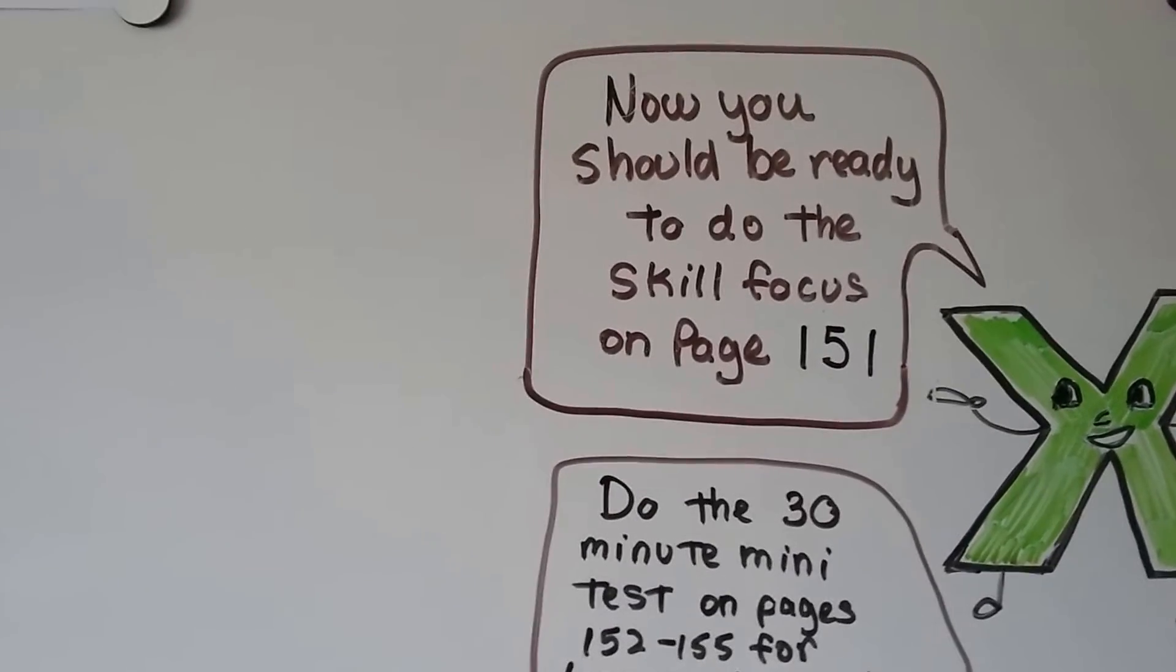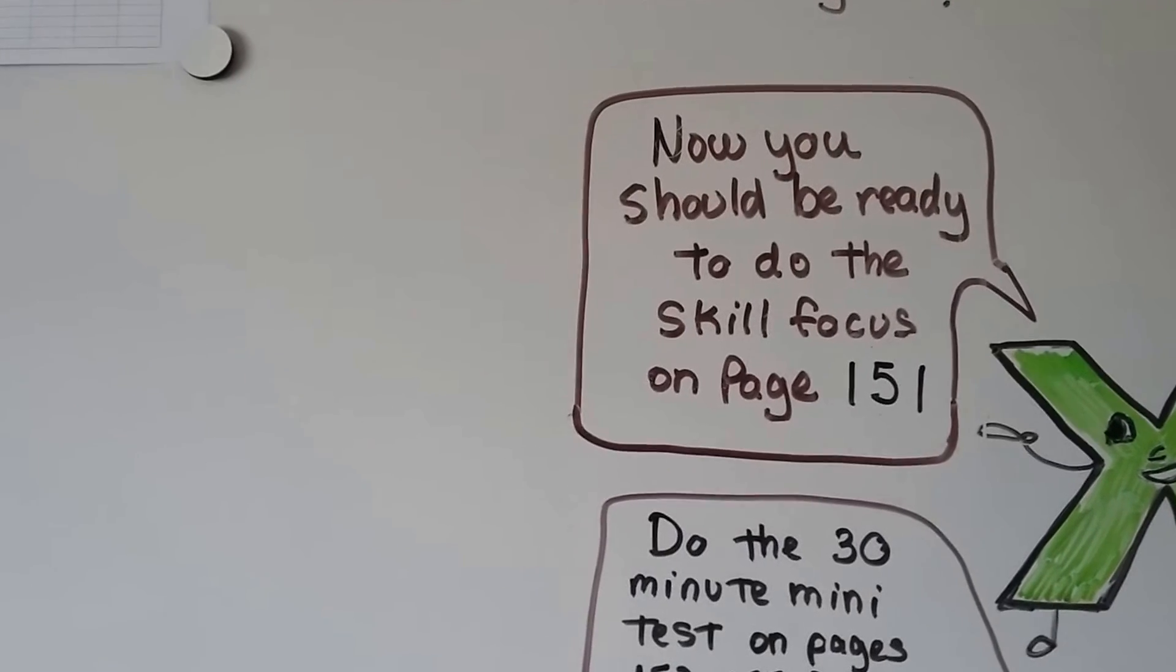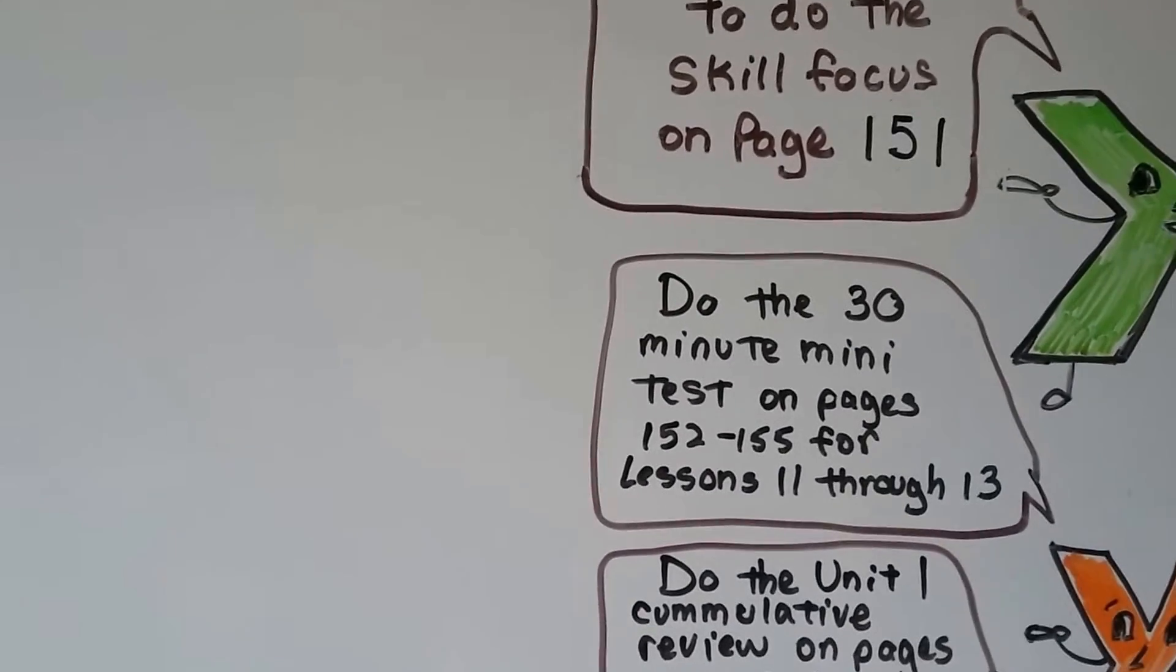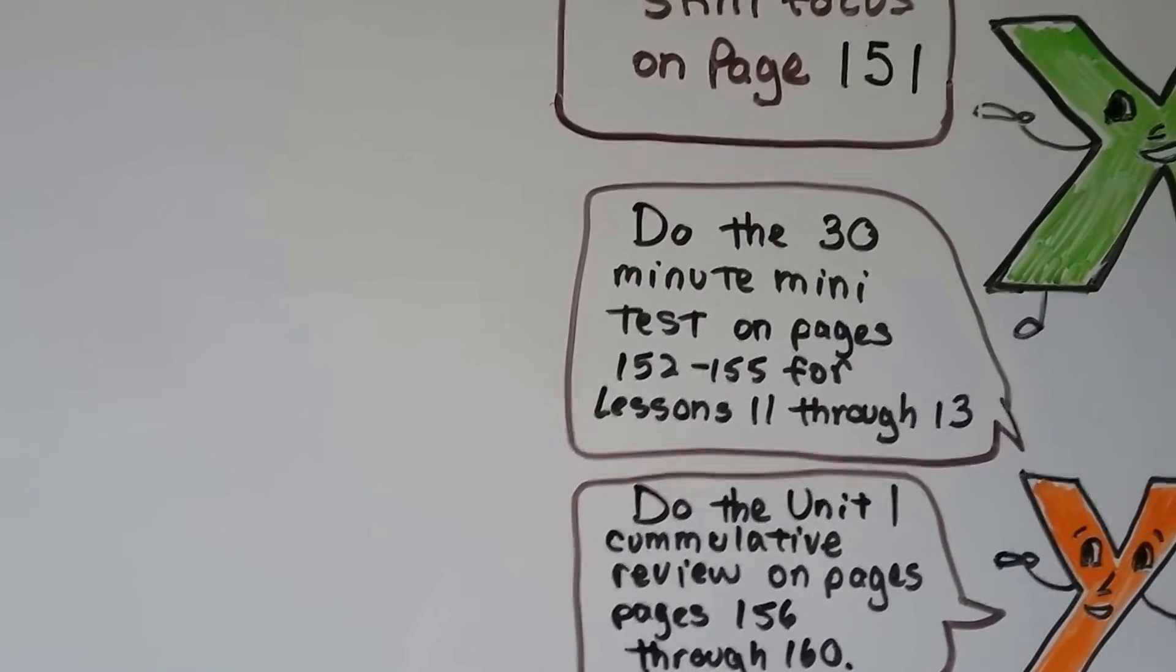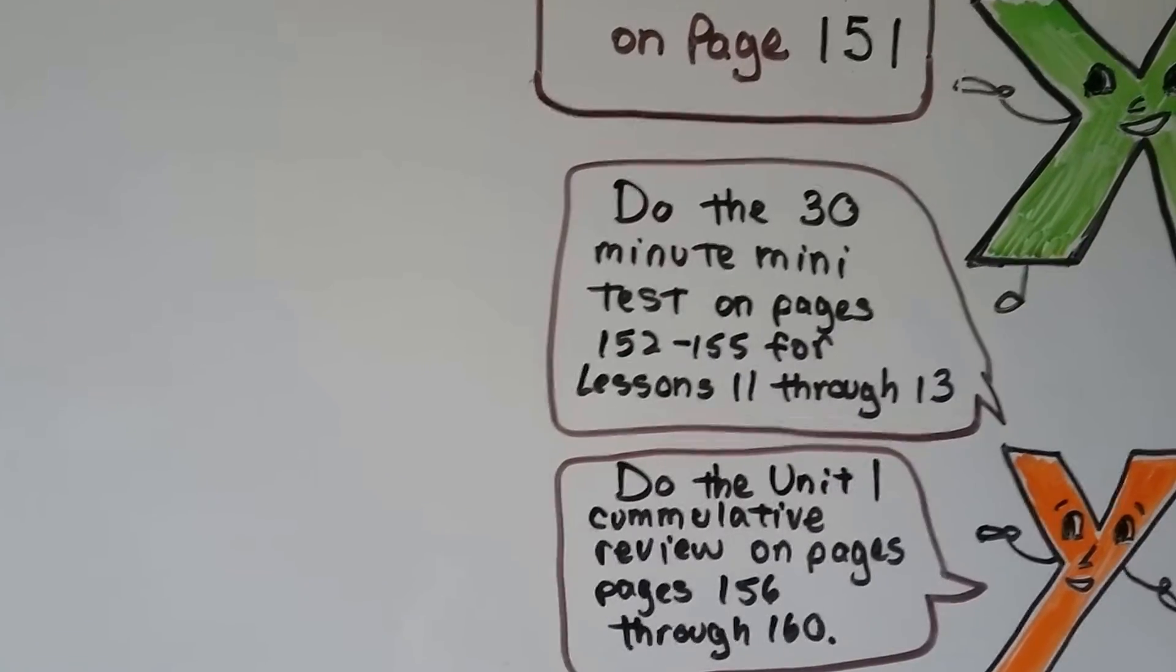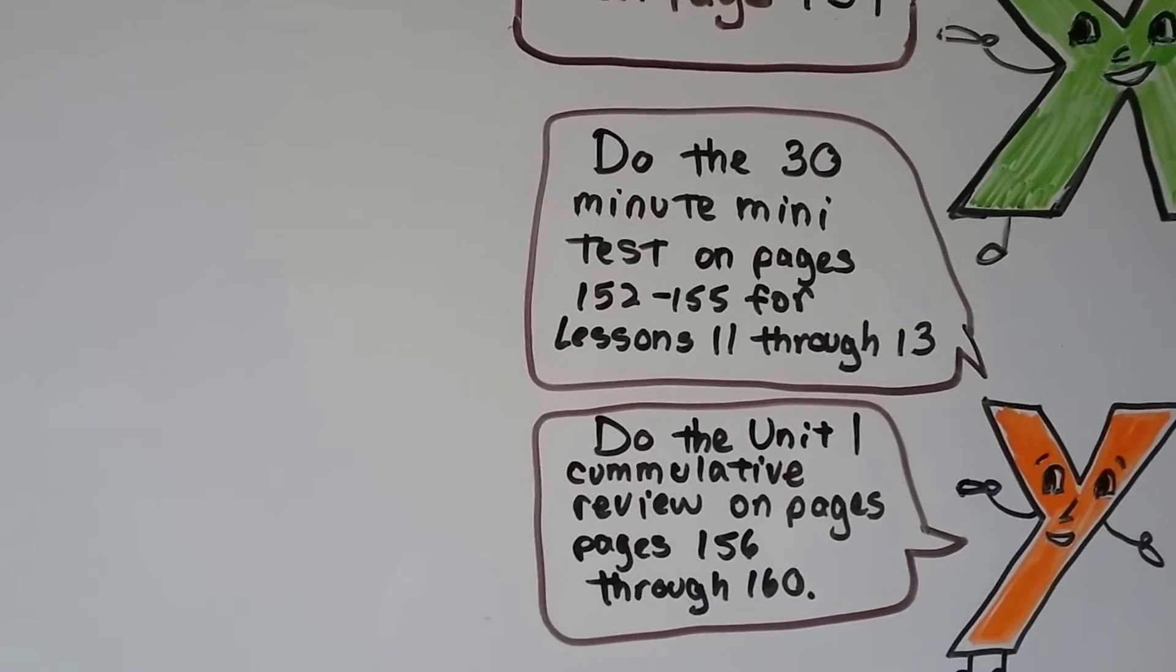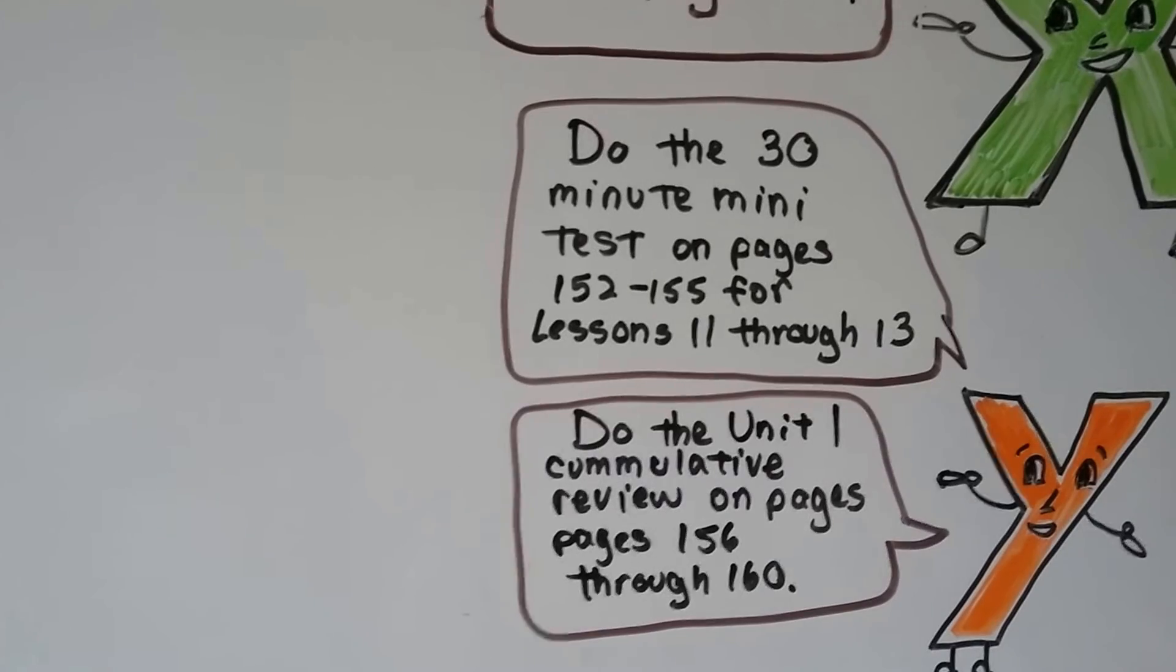And now you should be ready to do that skill focus on page 151. And do your best. If you have trouble, go back and figure out what you're missing because we're finishing Unit 1 now. You don't want to go into Unit 2 with measurements when you haven't even gotten the percentages and fractions and decimals down. There's a 30-minute mini-test on pages 152 through 155 for lessons 11 through 13. Try to do it in the 30 minutes. See how many you can answer because that's going to give you a good judge of how many you're going to answer on the GED test.